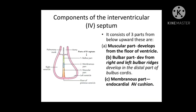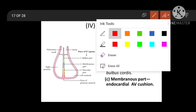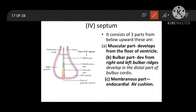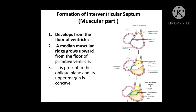The membranous part is developing from the endocardial cushion — specifically the endocardial AV cushion will form the membranous part of the interventricular septum.